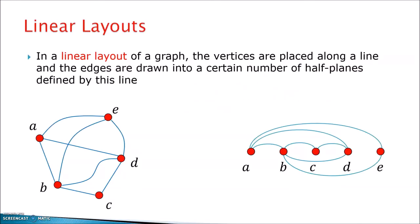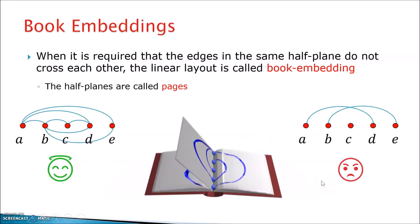Linear layouts of graphs are drawings in which vertices are placed along a line in a certain order and then the edges are drawn in some of the half-planes defined by this line. For example, here I have a drawing using two half-planes. In general, I can consider more half-planes and this actually looks like placing the vertices along the spine of a book and then placing the edges on the pages of this book.